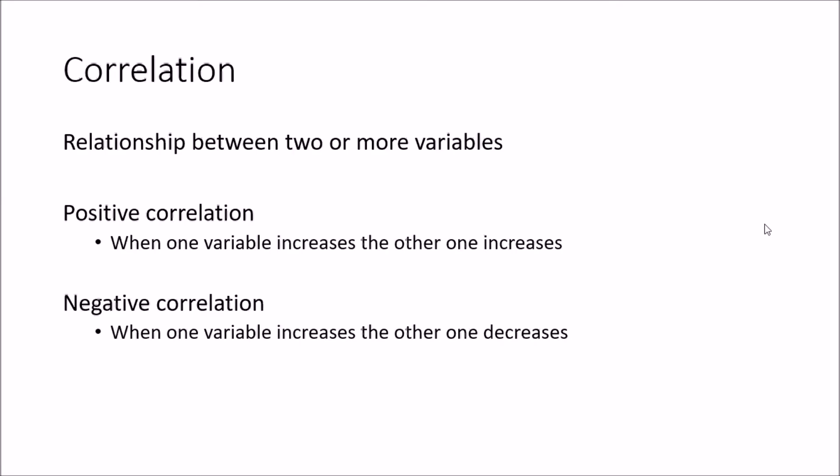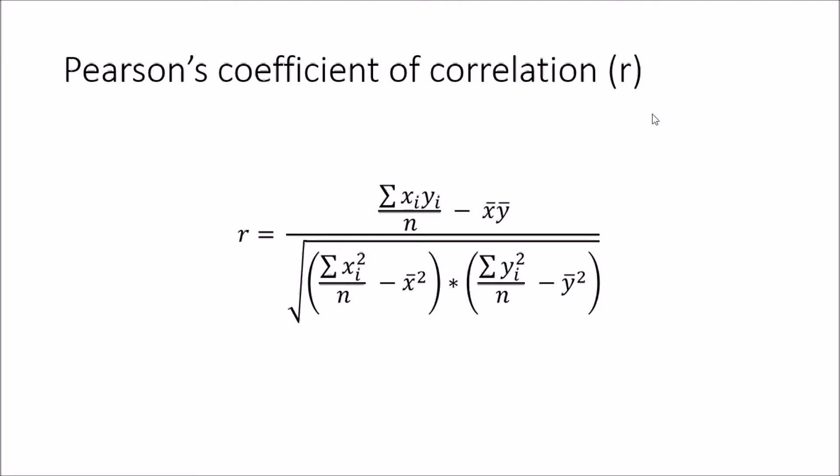One is called positive correlation — that is when one variable is increasing, the other variable is also increasing. The other type is negative correlation — that is when one variable is increasing, the other variable is decreasing. Now we will look at the equation which we can use to identify a numerical value for the correlation.